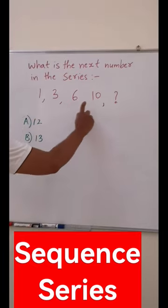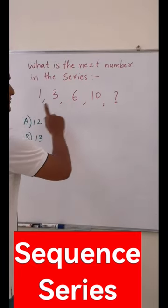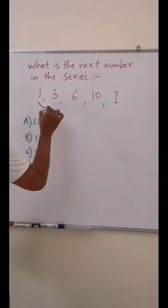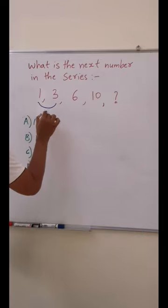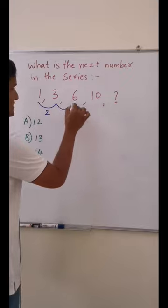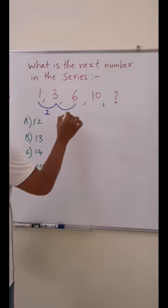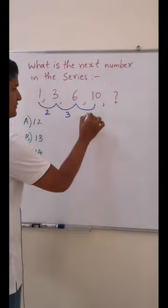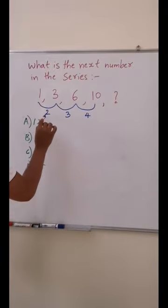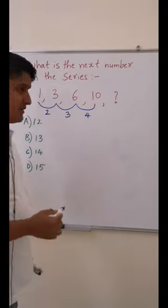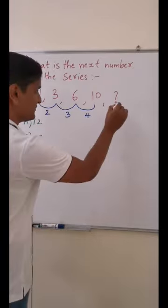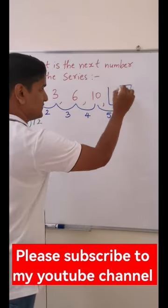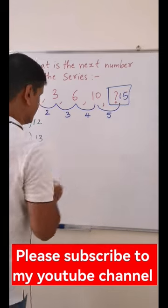Hi, hello everyone. How to find the next number of this series. If you see this number, the difference between them: 3 minus 1 is 2, 6 minus 3 is 3, 10 minus 6 is 4. So the differences are 2, 3, 4 — after 4 comes 5. So the next difference will be 5, and 10 plus 5 is 15. The answer will be 15.